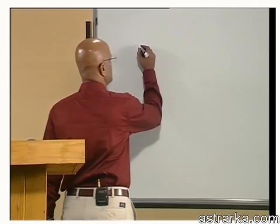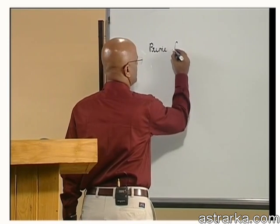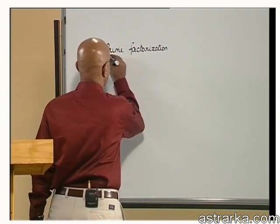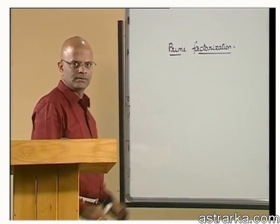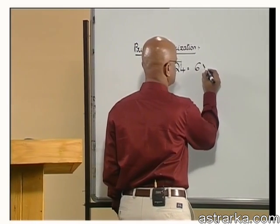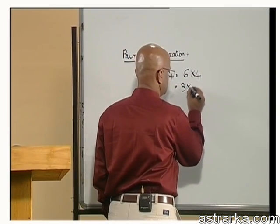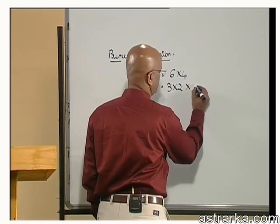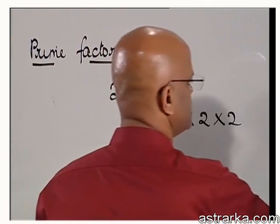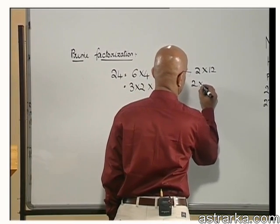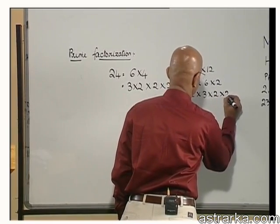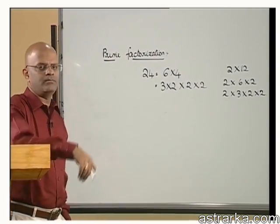Now we will come to prime factorization. Let us take the case of 24. 24 is 6 into 4. 6 is 3 into 2, and 4 is 2 into 2. You could have actually started as 24 is 2 into 12 and you would have still got the same answer: 2 into 6 into 2, 2 into 3 into 2 into 2. So three 2's and one 3 — it really didn't matter where you started.